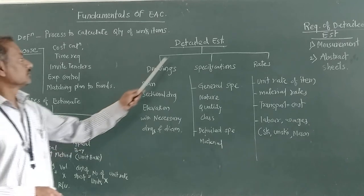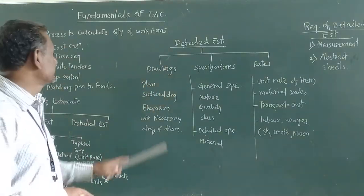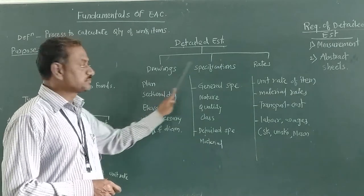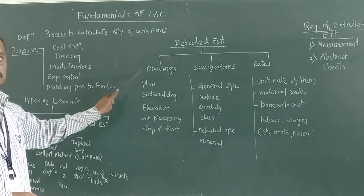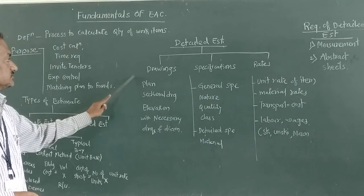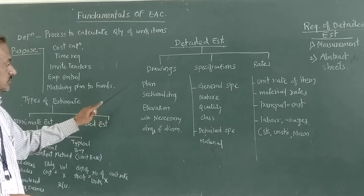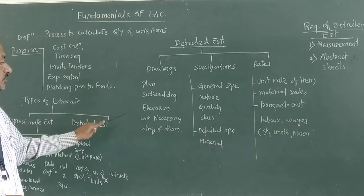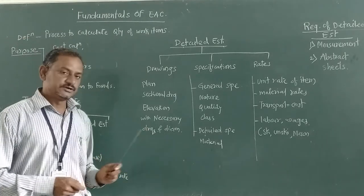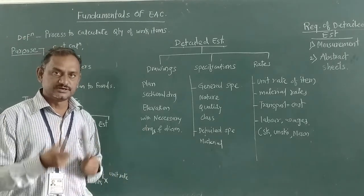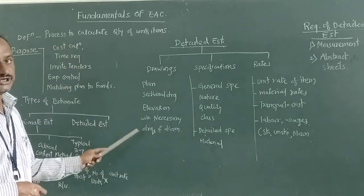Then we move on to detailed estimate. Detailed estimate requires drawings, specifications, and rates. The drawings include plans, sectional drawings, elevation, width, and necessary lengths — the dimensions and details of the drawings. These are called working drawings.